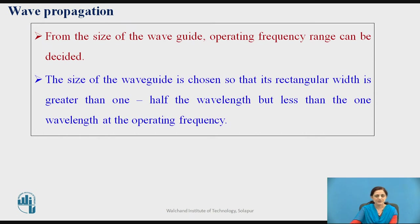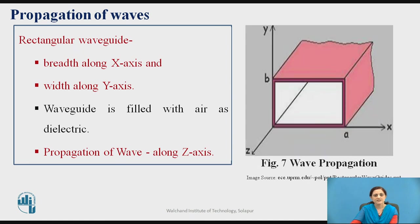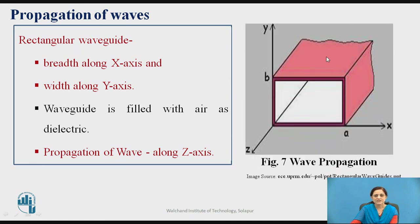From the size of the waveguide, the operating frequency range can be decided. The size of the waveguide is chosen such that its rectangular width is greater than one half the wavelength but less than one wavelength at the operating frequency. In the rectangular coordinate system, breadth A is placed along the x-axis and width B along the y-axis. The waveguide is filled with air as the dielectric medium, and propagation of the wave is along the z-axis.